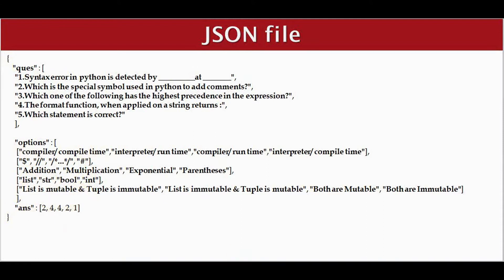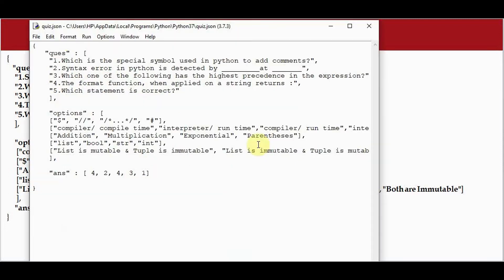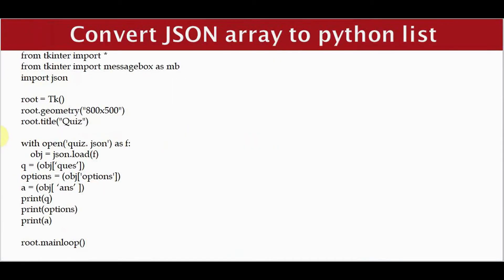This file must be saved with the extension dot JSON. This is our JSON file, quiz.json. It is stored in this format. Now we'll move on to the second step — converting this JSON array to a Python list.